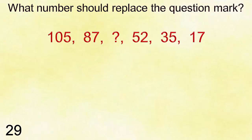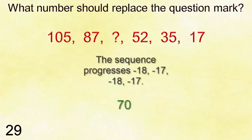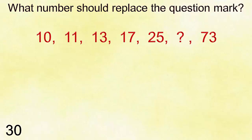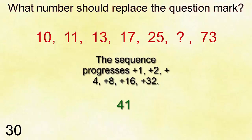Answer is sixty-three. Number twenty-nine: one hundred five, eighty-seven, fifty-two, thirty-five, seventeen. Answer is seventy. Number thirty: ten, eleven, thirteen, seventeen, twenty-five, question mark, seventy-three.